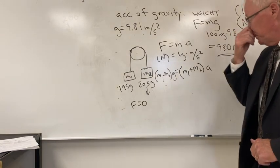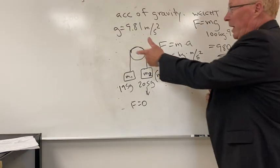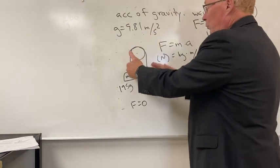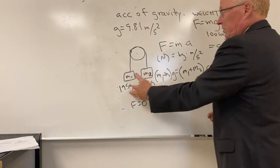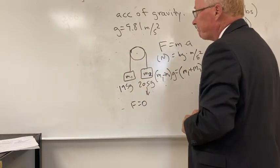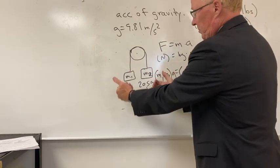So what he did was come up with what we call the Atwood machine, and it's a pulley with two masses on each side, one is larger than the other.